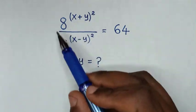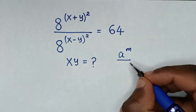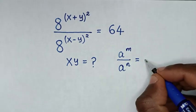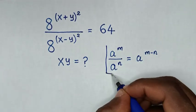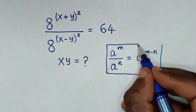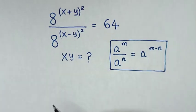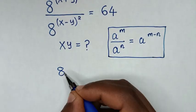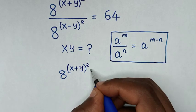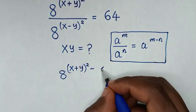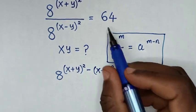So, from here, the left side is in the form of a^m over a^n is equal to a^(m-n). So in the first step, from here in the left side, it will be same base: 8 power of (x+y)² minus (x-y)² is equal to 64.